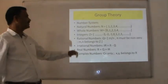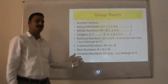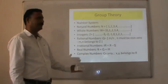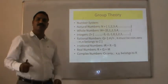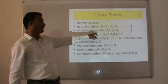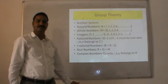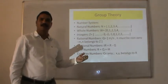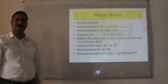Let us recall the number system. The very first is natural numbers, which are counting numbers starting with 1, 2, 3 and going up to plus infinity. The next is whole numbers — if you introduce the element 0 to the set of natural numbers, it becomes the whole numbers, usually denoted by W. The next is the set of integers, from minus infinity to plus infinity, consisting of all counting numbers, their negatives, and 0.